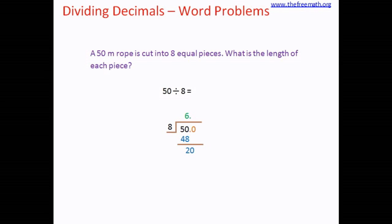So we have 20 now. 8 twos are 16; 20 minus 16 equals 4, the remainder is still not 0. So we put an extra 0 again and bring it down — we have 40 now. 8 fives are 40, the remainder is 0. So our answer is 6.25. That means the length of each piece of the rope is 6.25 meters.